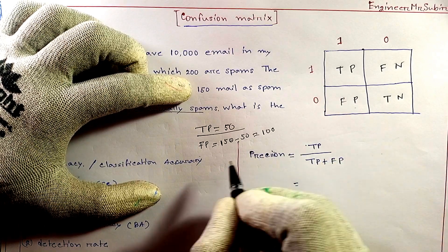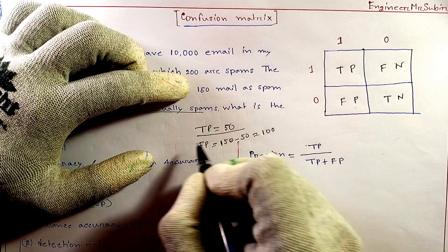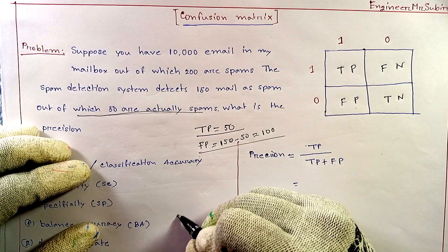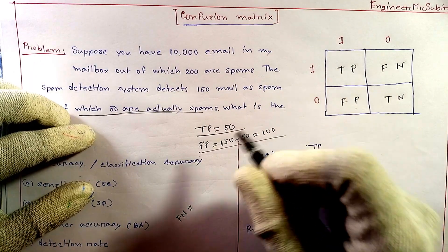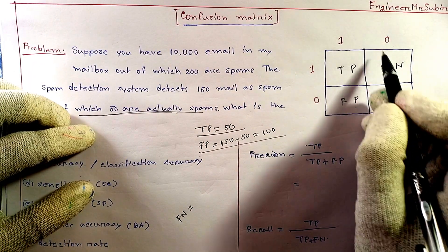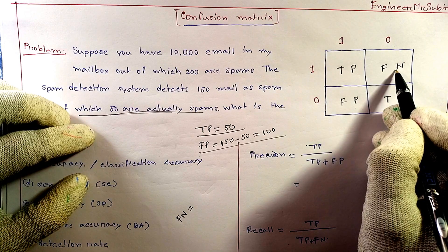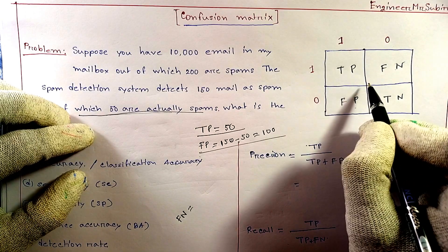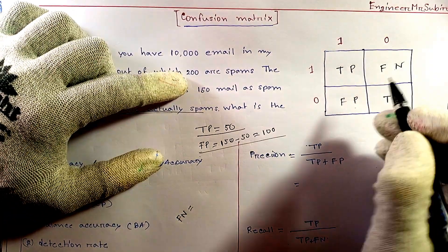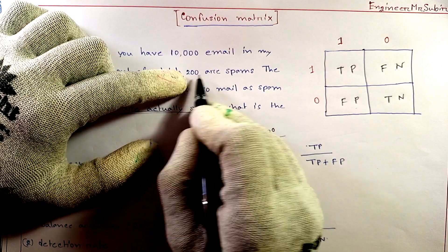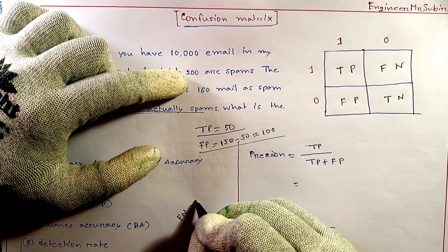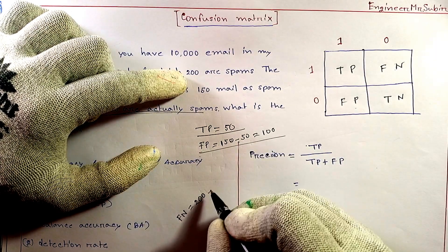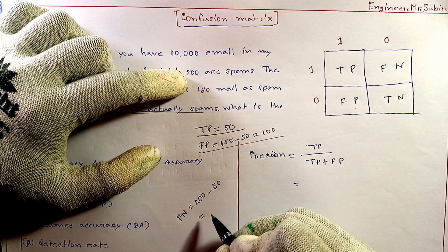Next we have to find FN. FN means machine predicted negative but actually it is positive. So we subtract from the total actual spam of 200: FN equals 200 minus TP (which is 50), so FN equals 150.